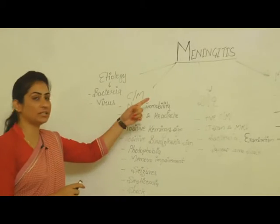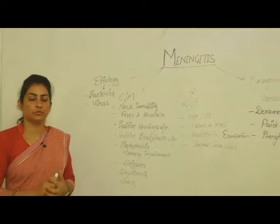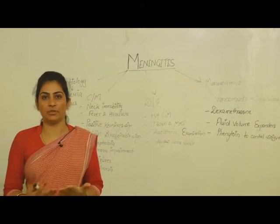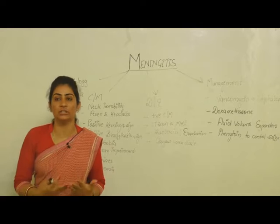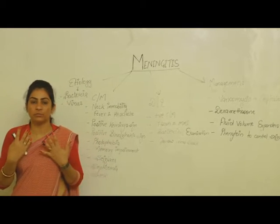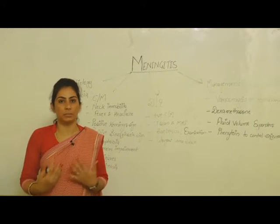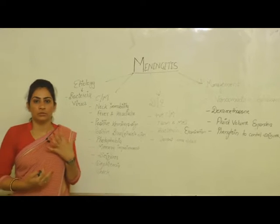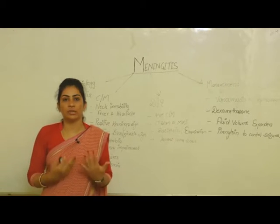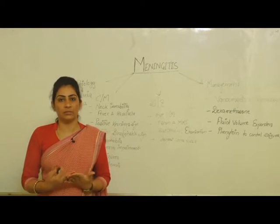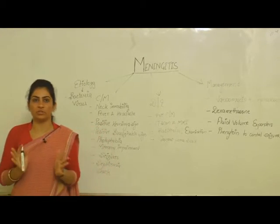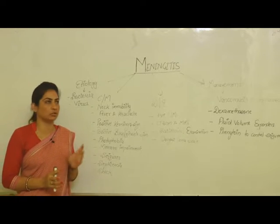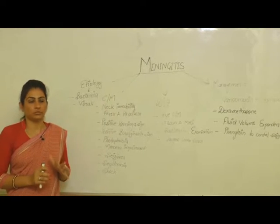Today's topic is Meningitis. So what is Meningitis? Meningitis is the inflammation of the layers of the brain and spinal cord. These are the meninges: dura mater, arachnoid mater, and pia mater. The inflammation of all these layers of the brain is called Meningitis.